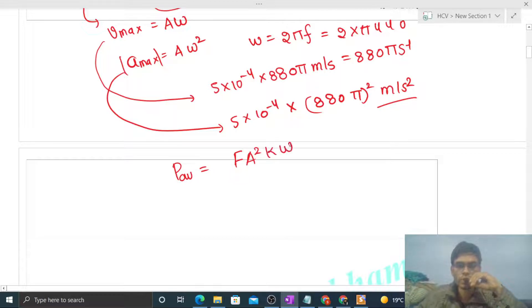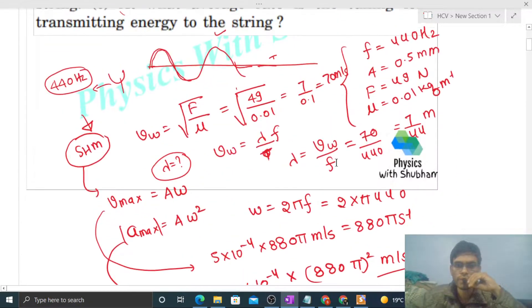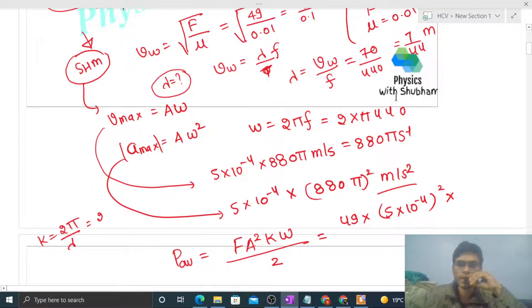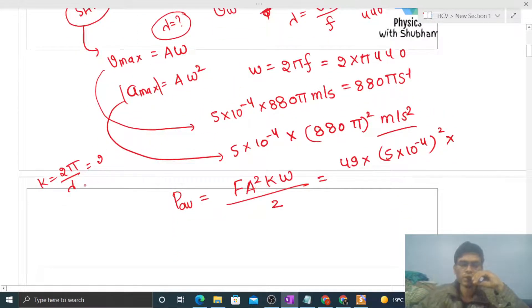F is the tension force = 49 N, amplitude A = 5 × 10⁻⁴ m. For k, we can find it as k = 2π/λ = 2π/(7/44) = 88π/7.